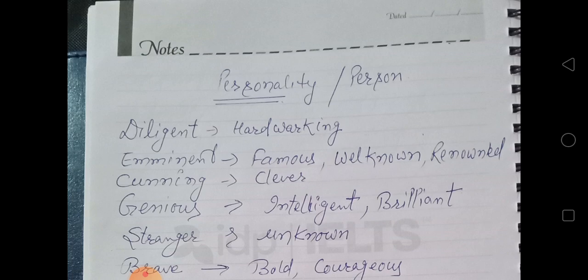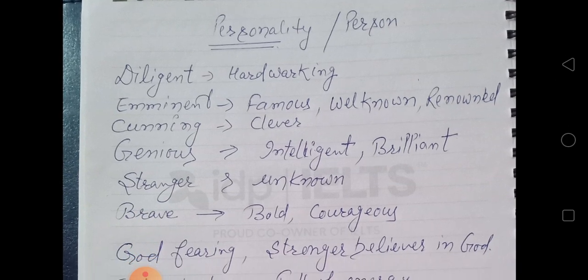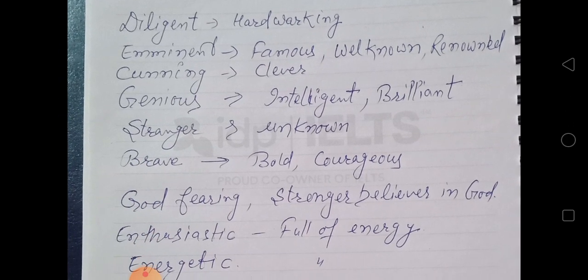Cunning means clever. I have a cunning cat. Genius means intelligent, brilliant. Mahatma Gandhi was famous for his genius.